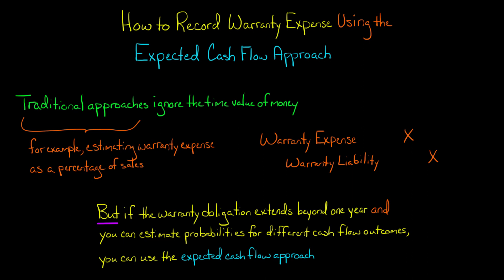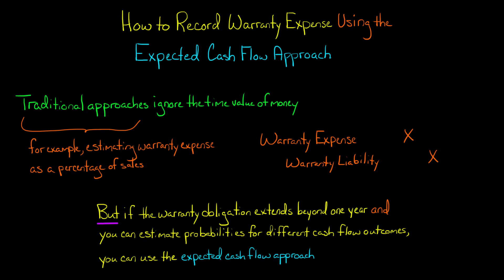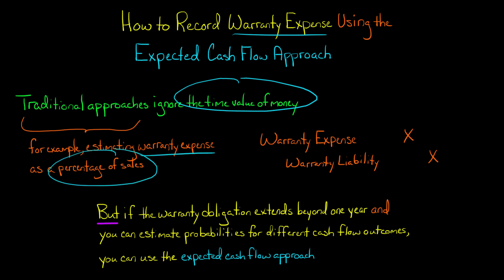In this video, I'm going to show you how to record warranty expense using the expected cash flow approach. Traditional approaches to estimating warranty expense ignore the time value of money. For example, a company might accrue warranty expense as a percentage of sales. So if the company did $100 million in sales during the period and historically warranty costs had been about 3% of sales, the company would debit warranty expense for $3 million and credit warranty liability for $3 million. But this makes no consideration for the time value of money.